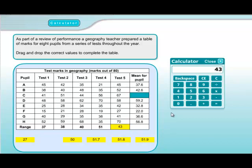For the second one, it's asking for the mean for pupil C. The mean is the average — you add up all the numbers and divide by how many there are. We have to do it across the row because it's the mean for the pupil. So we add up the five numbers: 41 + 51 + 44 + 56 + 67 = 259. We divide by 5 because there are five numbers, and we get 51.8. That is one of our possible answers, so we drag that into place.